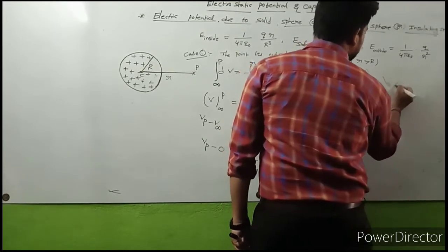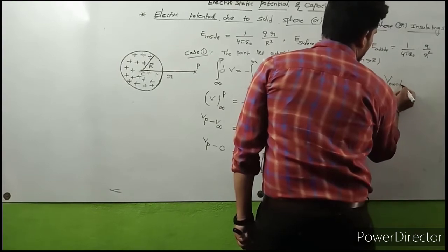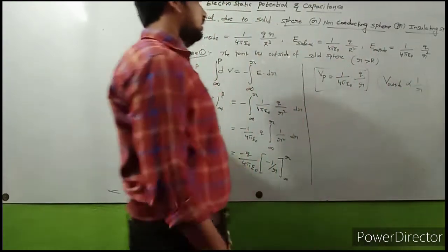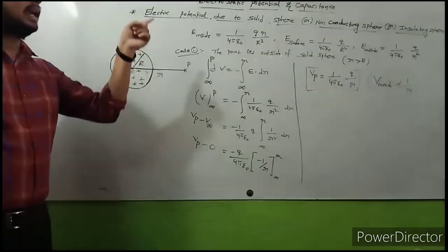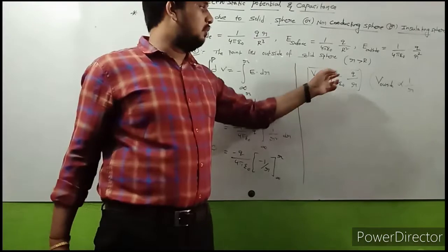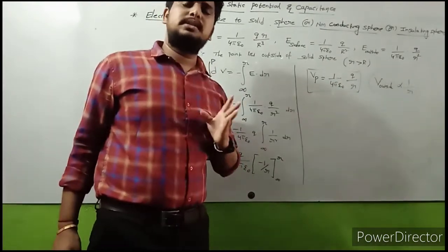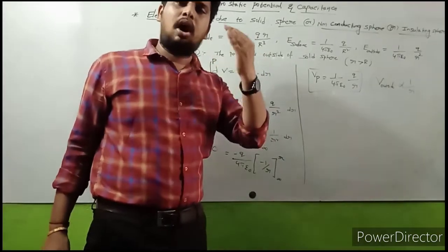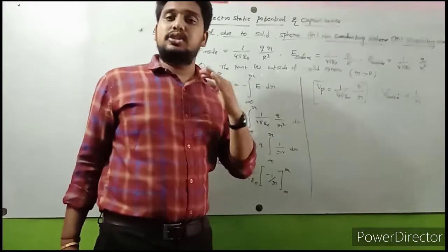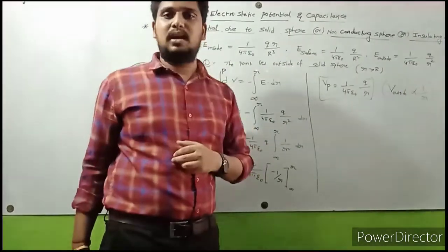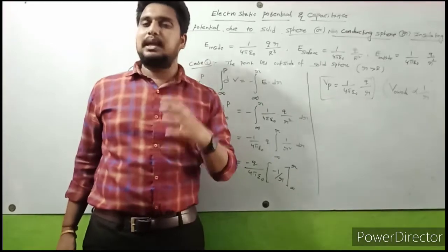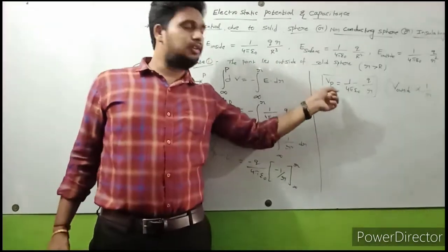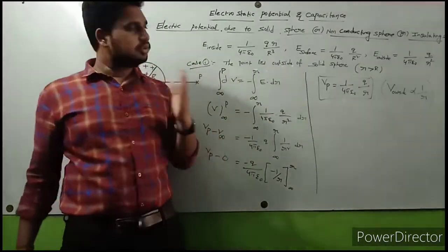So the electric potential outside the solid sphere is V = (1/4πε₀)(q/r), which is inversely proportional to r. Note: for a hollow sphere with the point outside, and for a solid sphere with the point outside, the formula is the same — both give (1/4πε₀)(q/r).